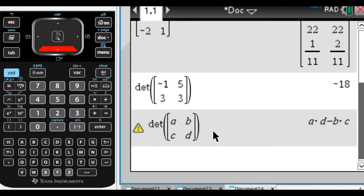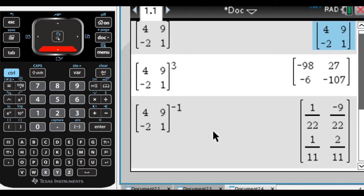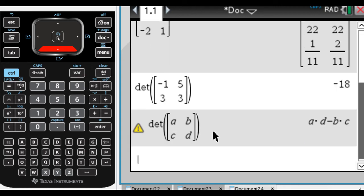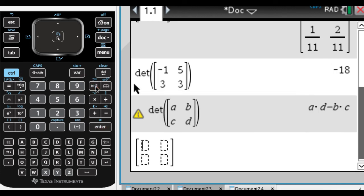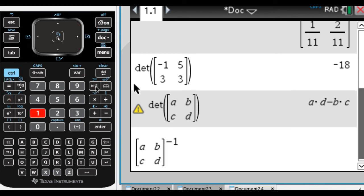But anyway, those are some things you can do. We can definitely raise a matrix to a power. We can find the inverse of a matrix by doing this. Let's see what happens when I try to do the inverse on a generic matrix—see if it'll tell us. I'm going to go with A, B, C, D, and then raise that to the negative first power.